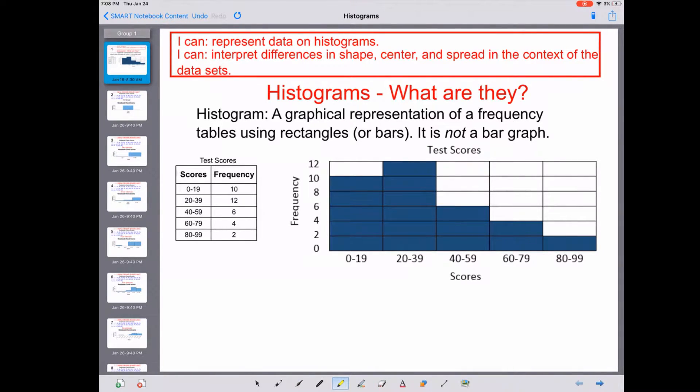Histograms are a graphical representation of a frequency table, which we've already been making in class, using rectangles or bars. But they are not a bar graph. Bar graphs measure categorical data, like the types of cars you have—red cars, blue cars, green cars—or what sizes of shirts you have in a department store: small, medium, large. Histograms measure frequency.